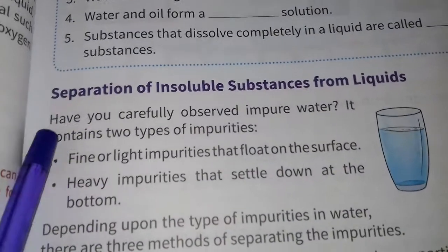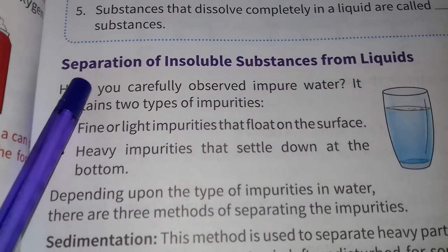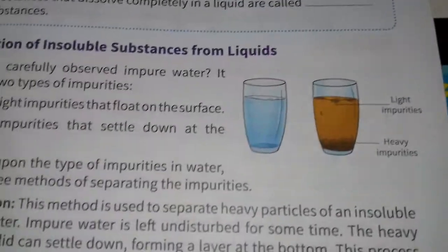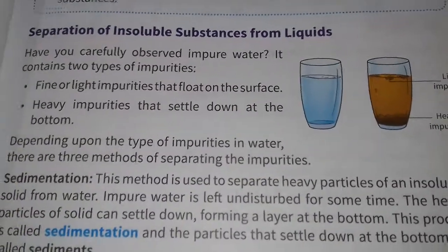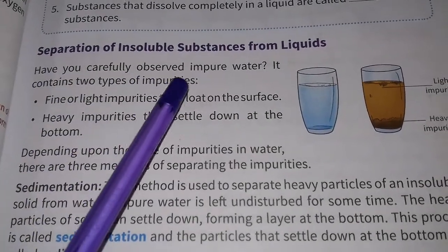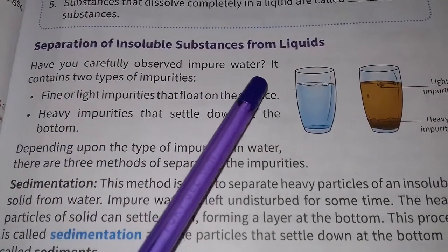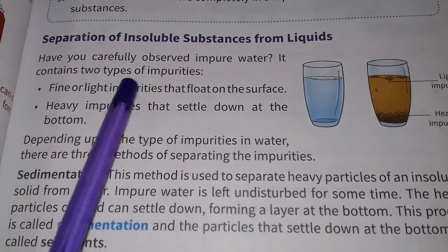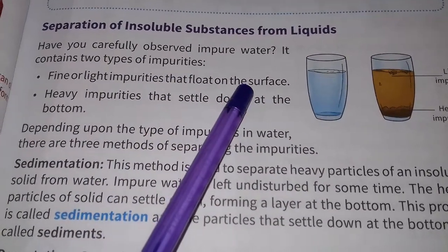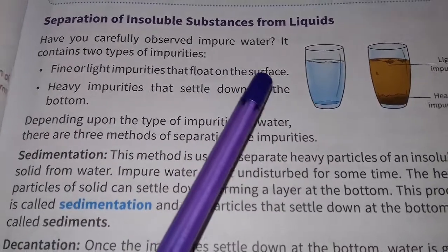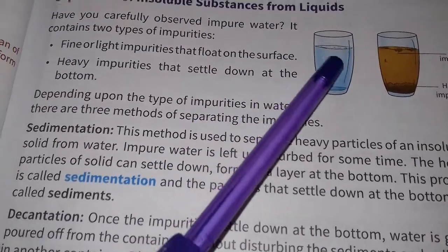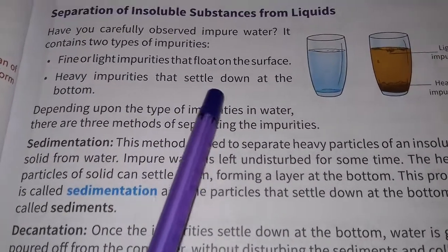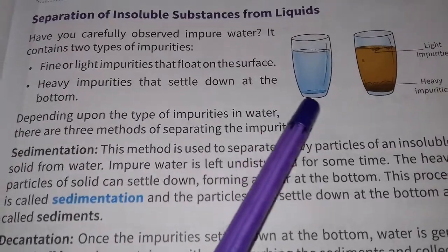Today we'll start from here: separation of insoluble substances from liquids. Have you carefully observed impure water? It contains two types of impurities: fine or light impurities that float on the surface, and heavy impurities that settle down at the bottom.